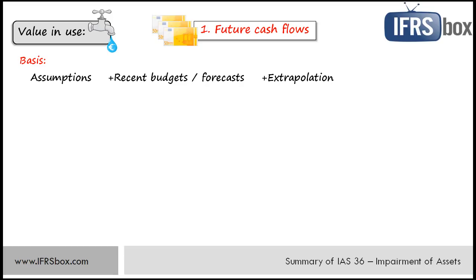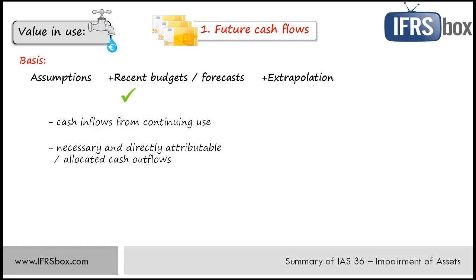Cash flow projections until the end of remaining useful life of an asset should be estimated by extrapolating cash flow projections based on a steady or declining growth rate. Items included in cash flow projections: first, cash inflows from continuing use — for example revenues generated by use of the asset under review; then cash outflows necessarily incurred to generate those cash inflows, directly attributed or allocated on a reasonable and consistent basis — for example day-to-day servicing, directly attributable overheads, allocated overheads; and finally the net cash flows to be received or paid for disposal of the asset at the end of its useful life.